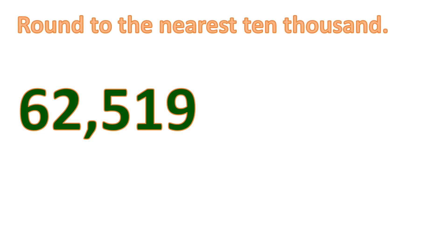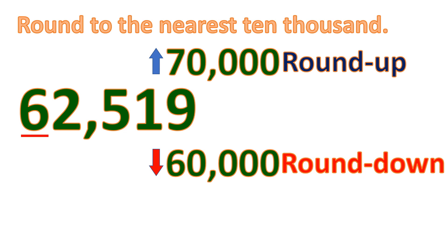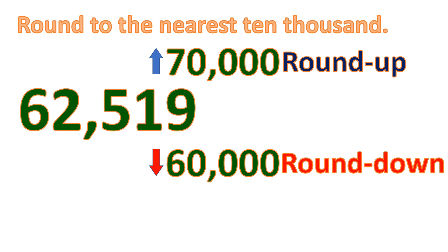Now let's round 62,519 to the nearest 10,000. We focus on the ten-thousands place, which has the digit 6. We find its nearest multiple of 10,000 — it will either round up to 70,000 or round down to 60,000. Looking at the number to the right, since it is 2, we round down to 60,000.